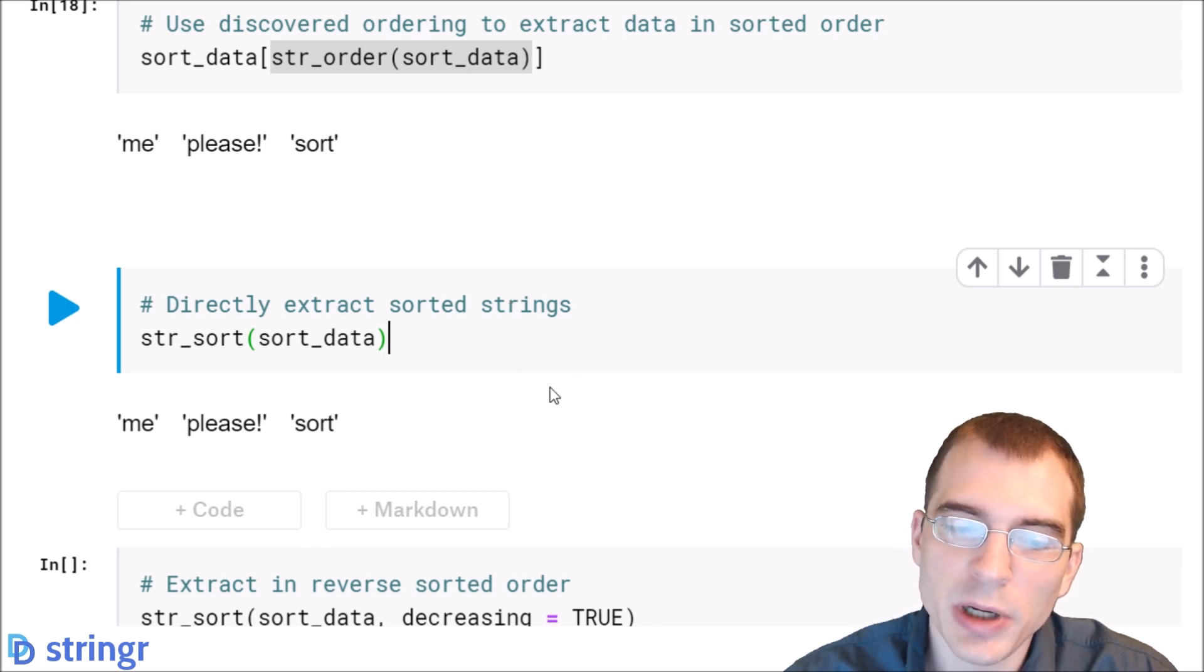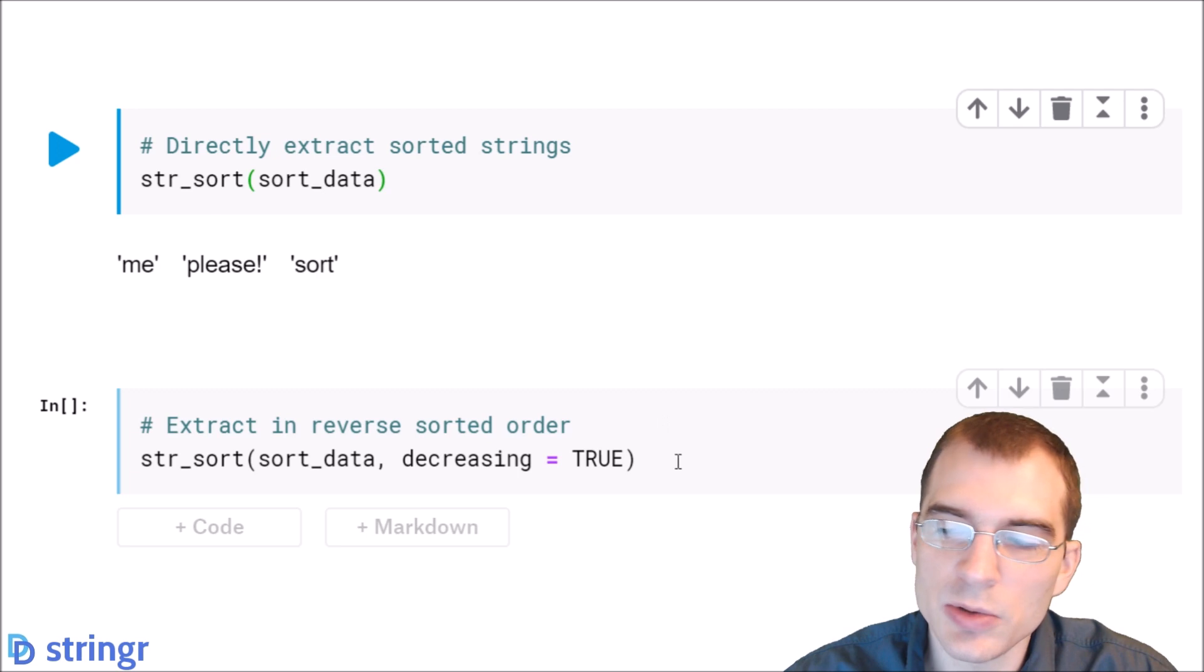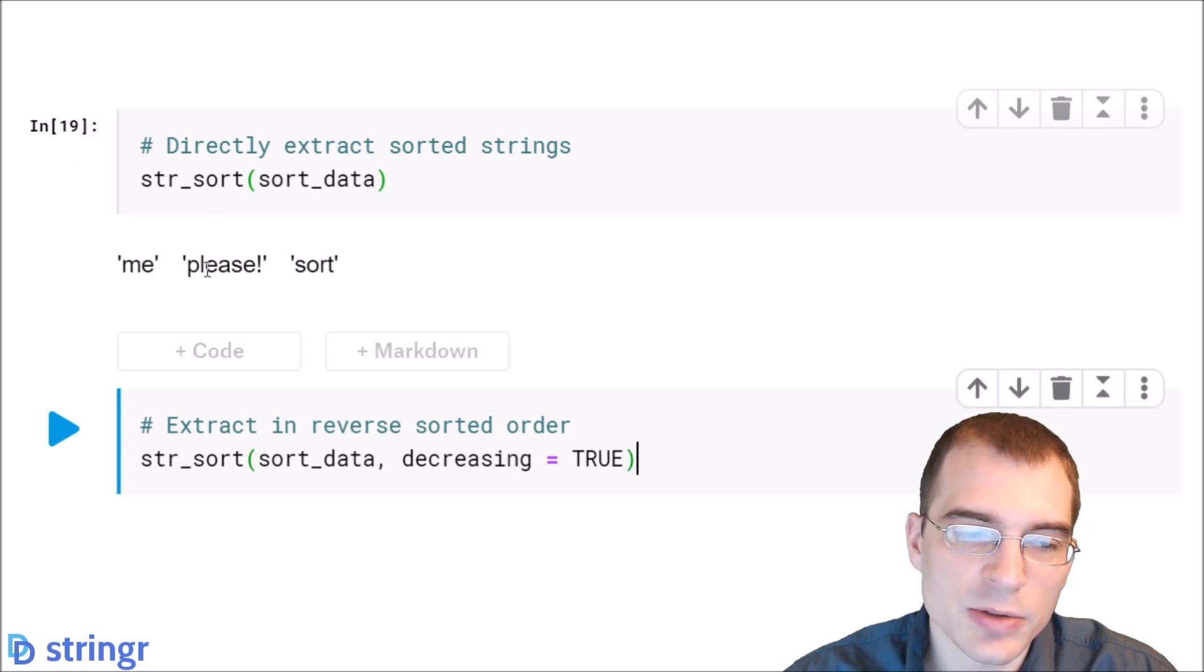And finally, if you want to sort the data, but in decreasing or descending order of alphabetical order, you can use the argument decreasing equals true. So when you run that, it'll do the same thing, but just essentially reverse the order.